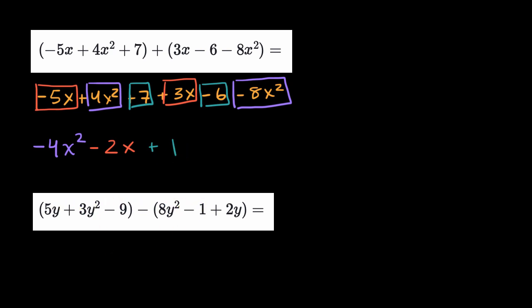Now this one, I can rewrite this first polynomial, the first part of this expression, five y plus three y squared minus nine. But we have to be a little bit careful here, because here we are subtracting this second polynomial.